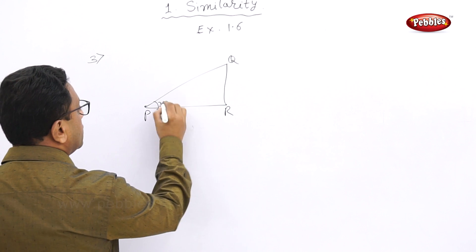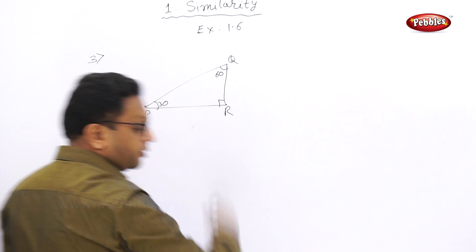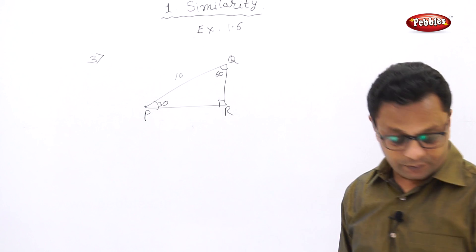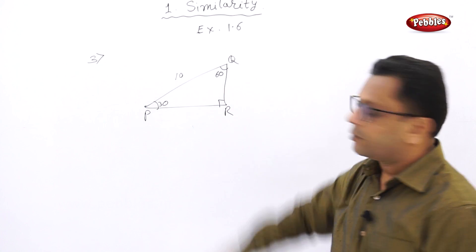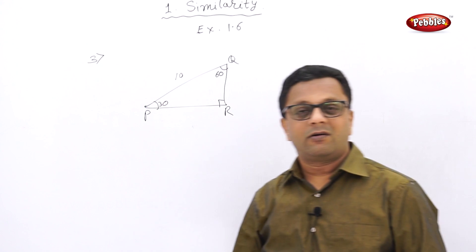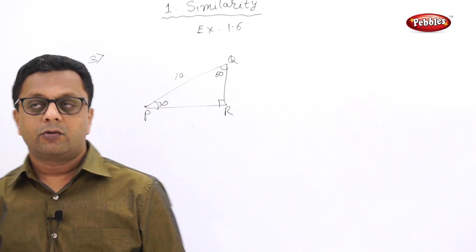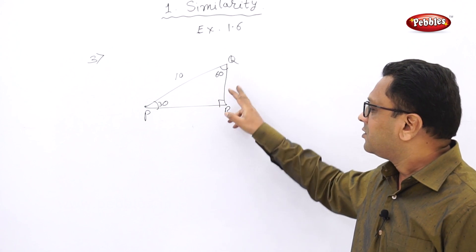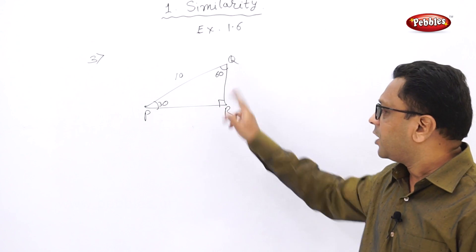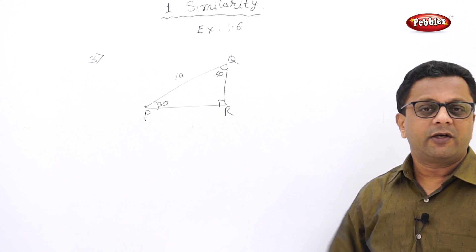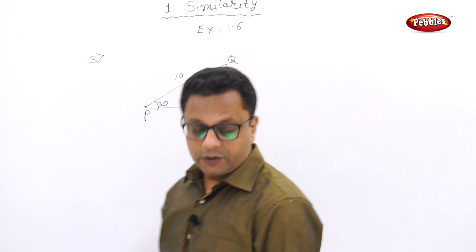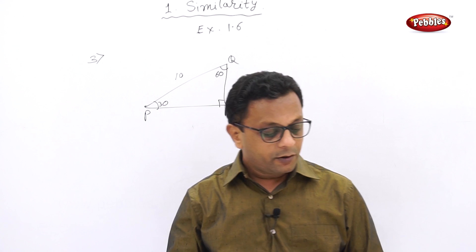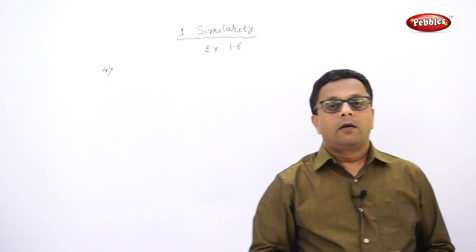Let us solve the third example. In triangle PQR: angle P is 30 degrees, angle Q is 60 degrees, angle R is a right angle, and PQ is 10. Find PR and QR. This is a 30-60-90 triangle and the hypotenuse is given. PR = 5, because the side opposite to 30 degrees is half the hypotenuse. Please pause your video and calculate QR. The unit will be units.